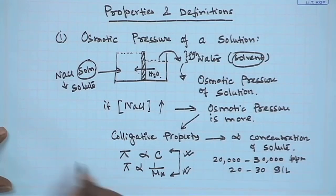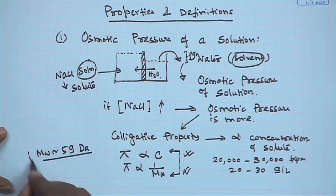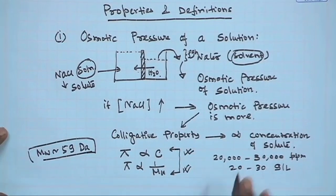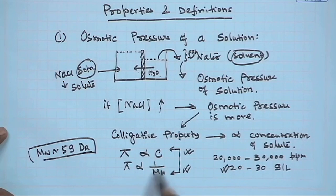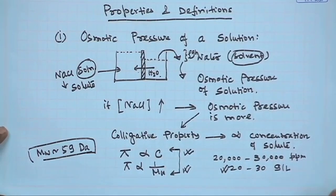The molecular weight of NaCl is around 58.5 daltons. At sea water concentrations of salt with this low molecular weight, the osmotic pressure turns out to be around 20 to 22 atmospheres. Therefore, in order to get reasonable throughput, one must operate above the osmotic pressure. This is why an operating pressure of 25 atmospheres or more is prescribed for reverse osmosis systems.